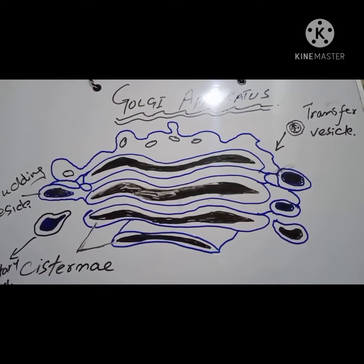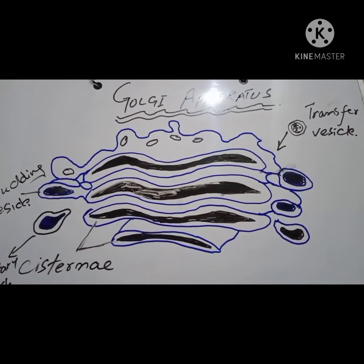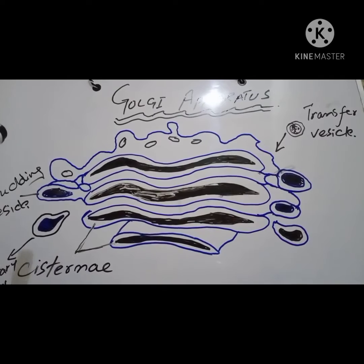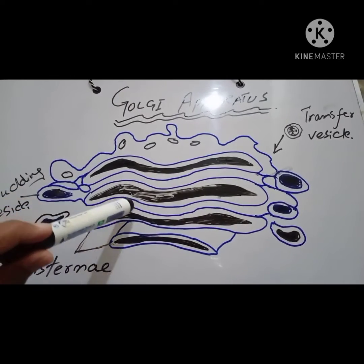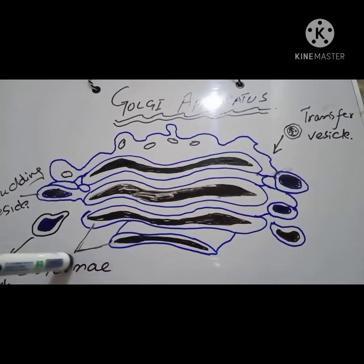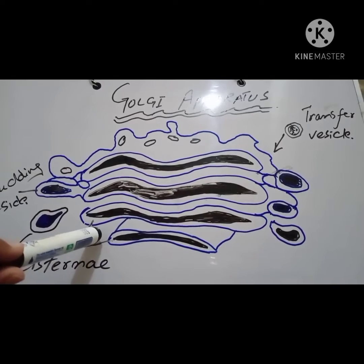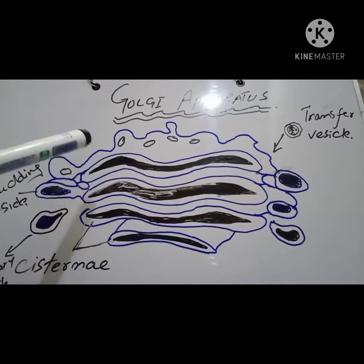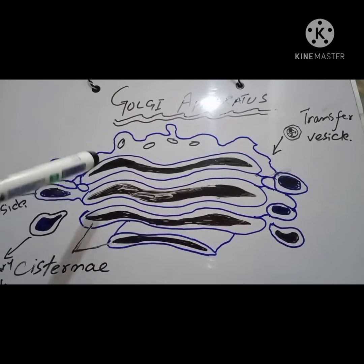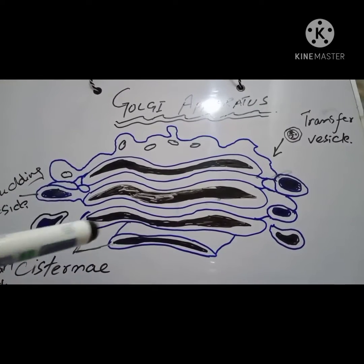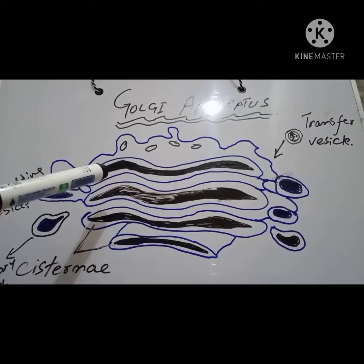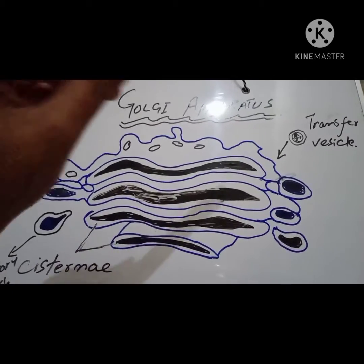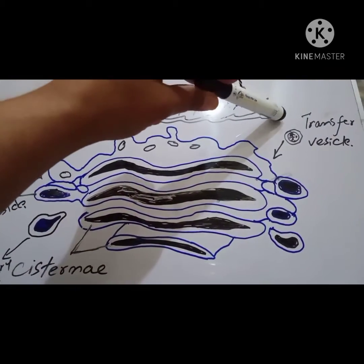Today our topic is about the Golgi apparatus, a cellular organelle. The term Golgi apparatus refers to a set of smooth membranes stacked into flattened fluid-filled sacs called cisternae. It is a complex system of interconnected tubules around central stacks, which are continuously formed by the fusion of vesicles derived from the budding of smooth endoplasmic reticulum. These vesicles are called transfer vesicles.